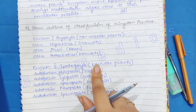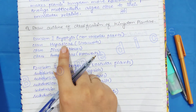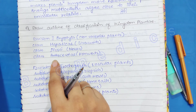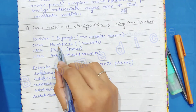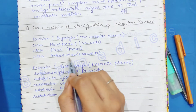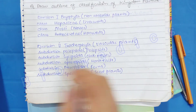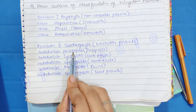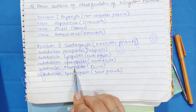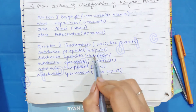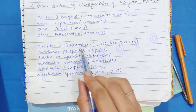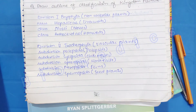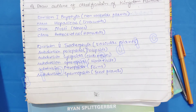Tracheophyta are vascular plants. In Bryophyta there are three classes: Hepaticae (liverworts), Musci (mosses), and Anthocerotae (hornworts). In the division Tracheophyta there are sub-divisions: Psilopsida, Lycopsida, Sphenopsida (horsetails), Pteropsida (ferns), and Spermopsida (seed plants).